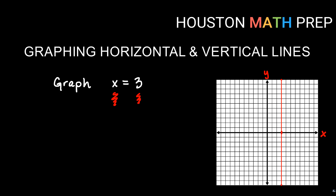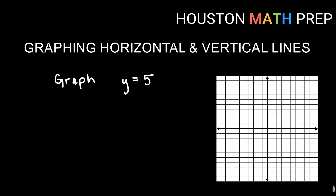If we look at the next one, here we have y equals 5. So that's going to only cross through the y-axis at the value 5. So if I have the x-axis here and the y-axis here, then it's going to cross y at 5. I count up 5 — 1, 2, 3, 4, 5.